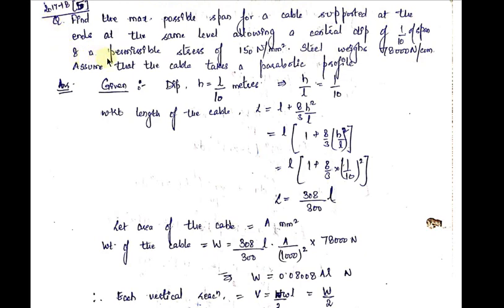From the previous derivation, we found that whenever a UDL acts on a cable, the profile of the cable is parabolic — which is also stated in the question. The dip (small h) is 1/10th of the span, so h = L/10. From this, the ratio H/L = 1/10. We also previously derived the length of the parabolic cable.